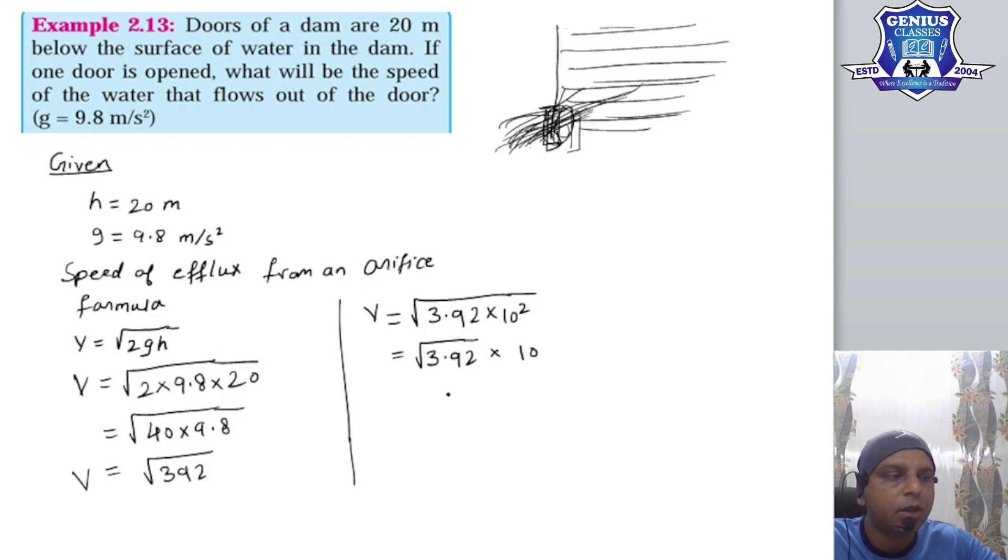And this is 10 multiplied. So what is this? Now you will go to the square root table from 1 to 10. For 3.92, the square root is 1.980. And this is multiplied by 10. So you multiply 1.980 by 10, you will get 19.80.